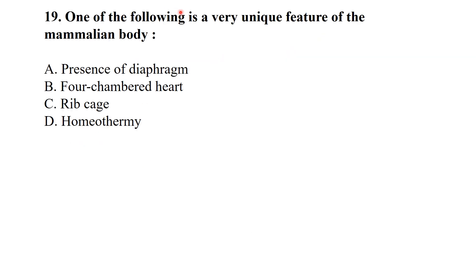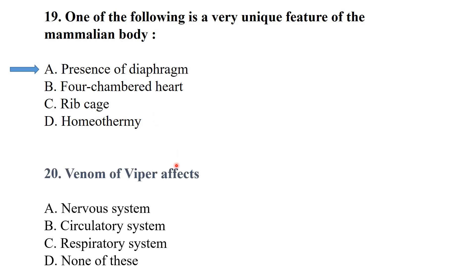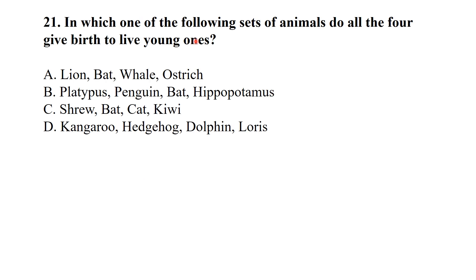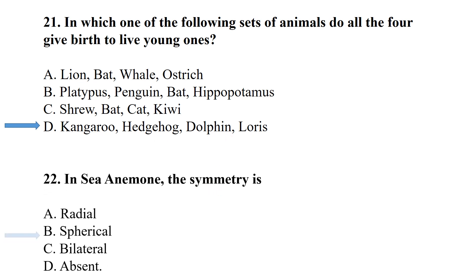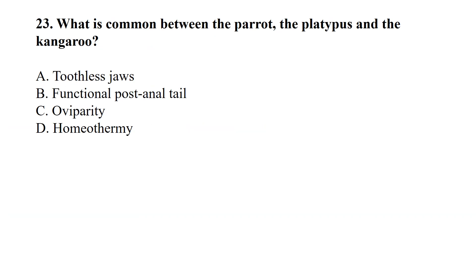One of the following is a very unique feature of the mammalian body. Venom of viper affects the circulatory system. In which set of animals do all four give birth to living ones? — Mammals: kangaroo, hedgehog, dolphin, and loris. Sea anemone — the symmetry of sea anemone is radial symmetry.